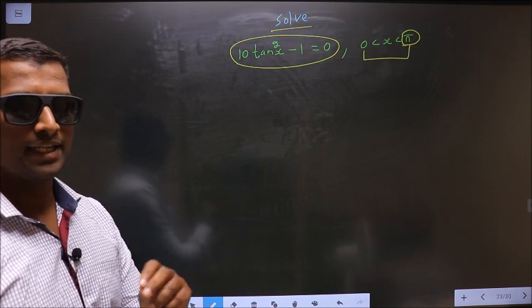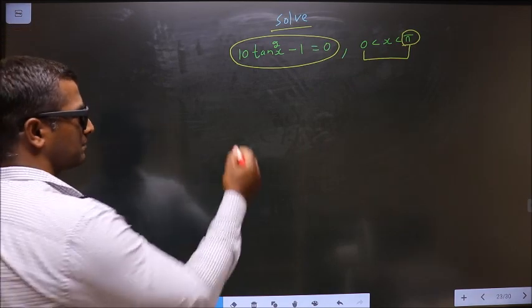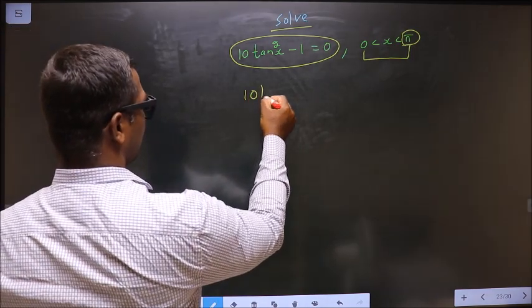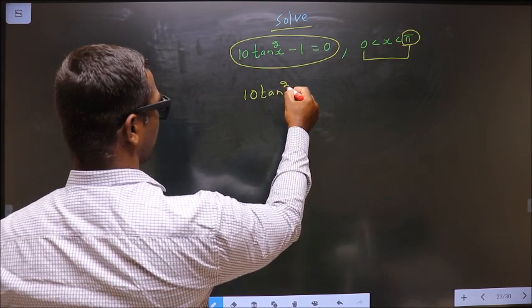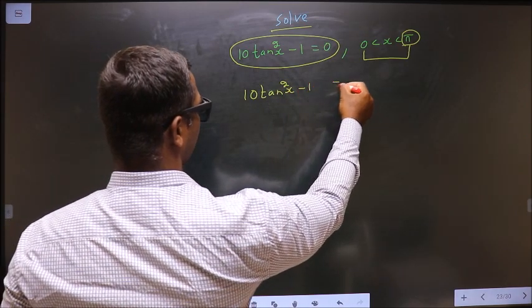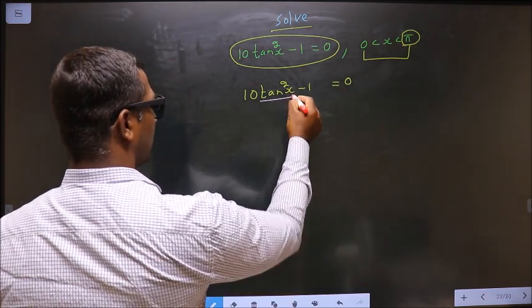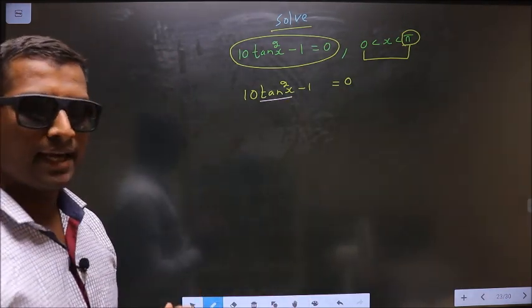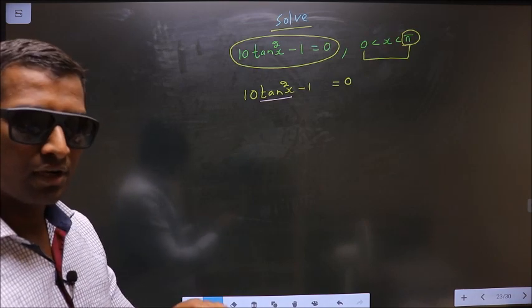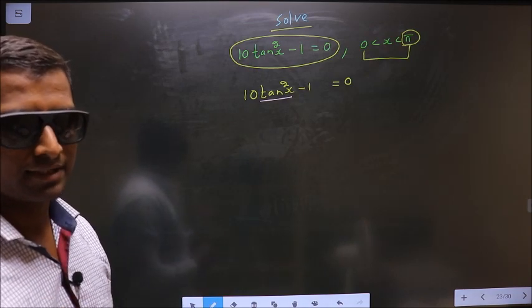Now the given equation is 10 tan²x - 1 = 0. Here you have tan x, so you should make tan x the subject. So remove all the connections connected to tan x.